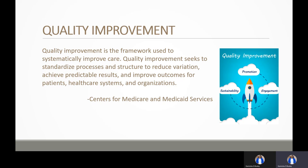Quality improvement, as defined by the Centers for Medicare and Medicaid Services, is a framework used to systematically improve care. It standardizes processes and structures to reduce variation, achieve predictable results, and improve outcomes for patients, healthcare systems, and organizations. The family planning program endorses a quality improvement system designed to ensure the highest quality of client services. Service sites providing family planning services should have a process for conducting quality improvement management to review and strengthen the quality of services on an ongoing basis.